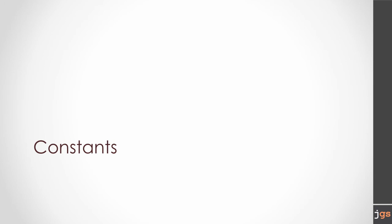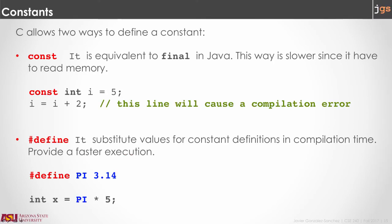Finally, I would like to review how C handles constant values. There are two options. You can use the keyword const that is equivalent to the keyword final in Java. So if you put the keyword const before the declaration of a variable, the value that you store in the variable cannot change. In this example, the value for i is 5, and if you try to change that, that will be an error in compilation time.